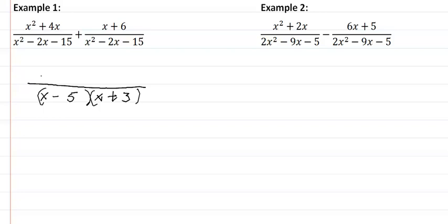So now we are going to combine like terms up top. So we have x squared plus 4x, our 4x plus our x which gives us 5x plus 6.